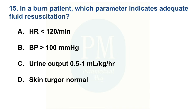In a burn patient, which parameter indicates adequate fluid resuscitation? Option A: HR less than 120 per minute. Option B: BP greater than 100 mmHg. Option C: Urine output 0.5 to 1 ml per kg per hour. Option D: Skin turgor normal. The correct option is Option C: Urine output 0.5 to 1 ml per kg per hour.